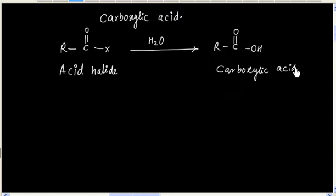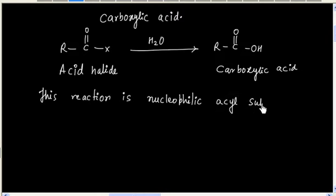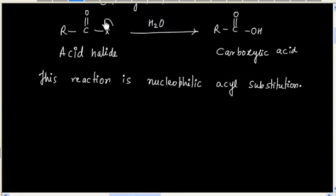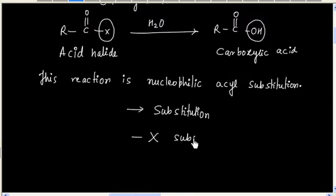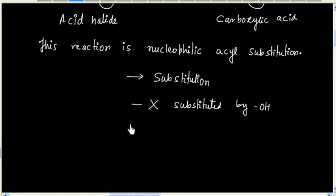This reaction is a nucleophilic acyl substitution reaction. We have replaced this X with an OH group. This reaction is a substitution because halogen is substituted by OH group. Since this substitution is happening on acyl carbon, that's why this is acyl substitution.